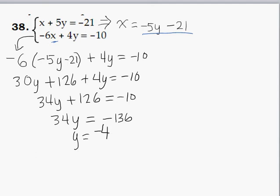Now we go back and replace Y with negative 4. And we can use this fact here that X is negative 5Y minus 21. So let's take negative 5 times Y, which is negative 4, and subtract 21 and see what we get.